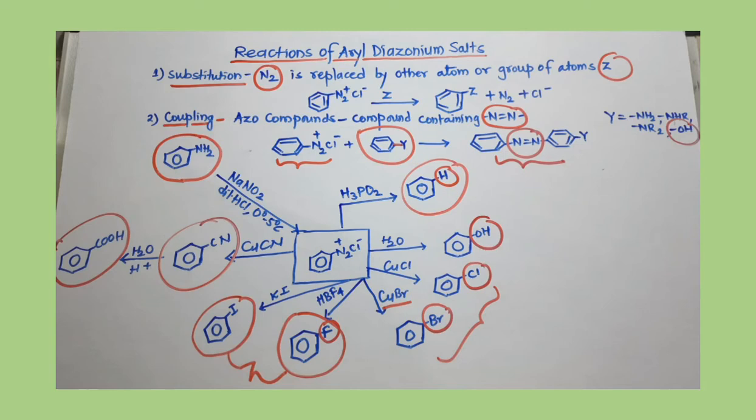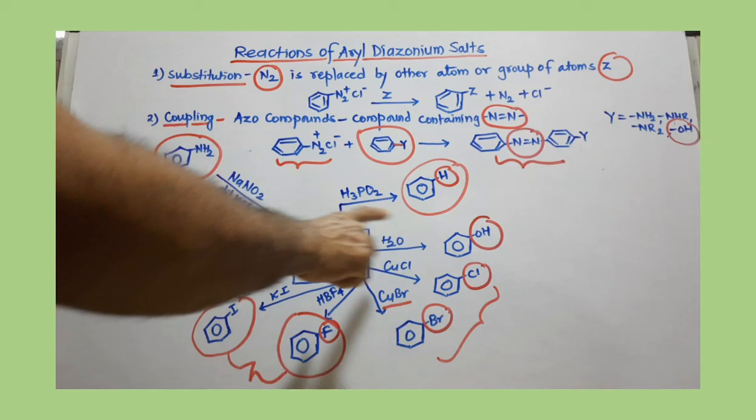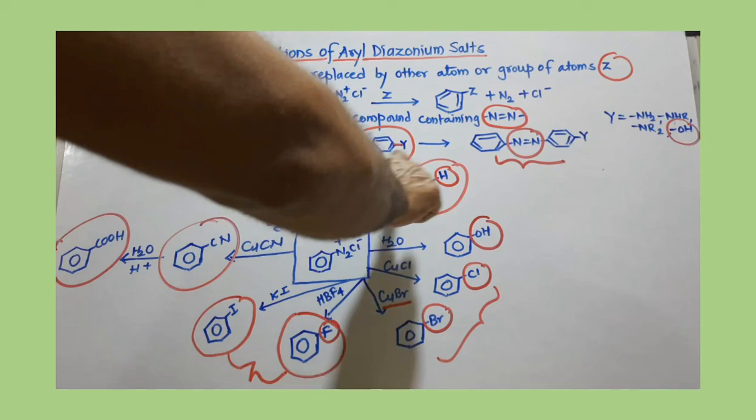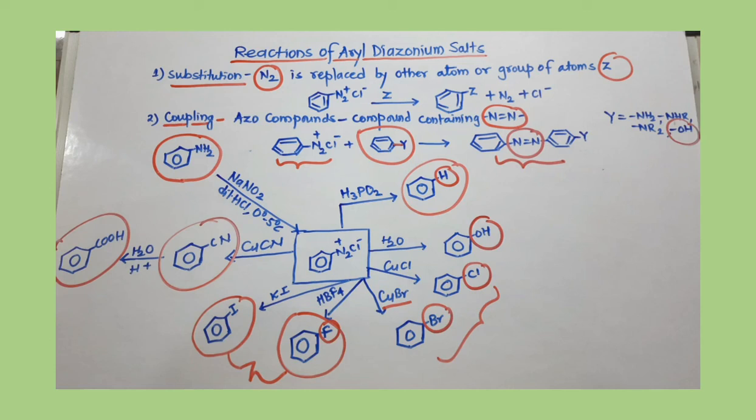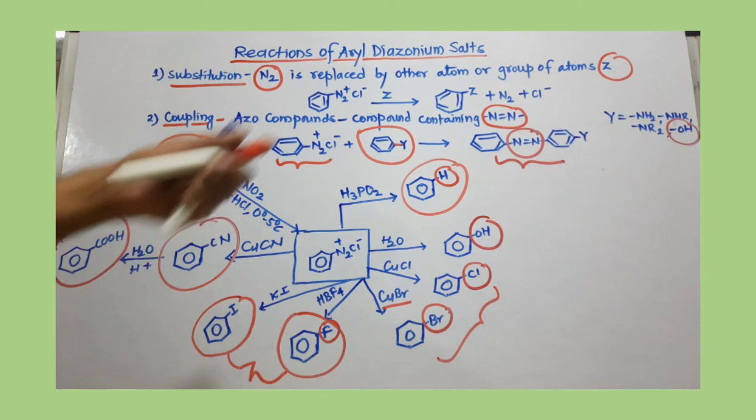Replacing the NH₂ group with hydrogen using H₃PO₂ is useful for various synthesis routes. In this way, aryl diazonium salts can be used to prepare many different derivatives by substitution reactions. Thank you.